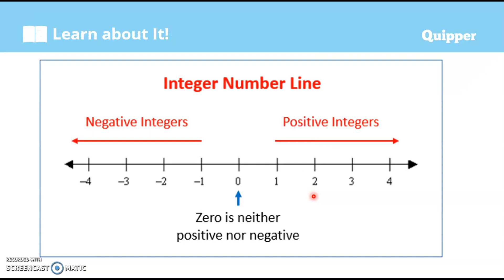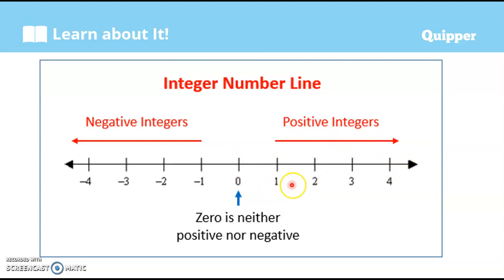First of all, let's review the concept of a number line. This is the integer number line. This is zero. To the right of zero, the numbers are the positive integers. So we have 1, 2, 3, 4, and so on. This arrow right here indicates that it goes on and on.